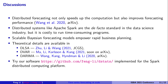In conclusion, distributed forecasting not only speeds up computation but also improves forecasting performance, as verified in our working paper on arXiv. Nowadays, distributed systems like Apache Spark are the de facto standard in data science industry, but running time-consuming programs like Bayesian models is costly. Efficient ensemble methods that make sub-models work together greatly improve the usability of Bayesian forecasting, and scalable Bayesian forecasting models really empower rapid business planning.